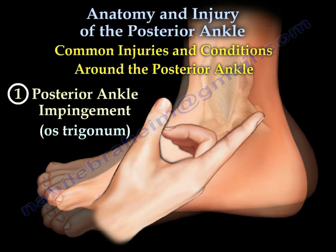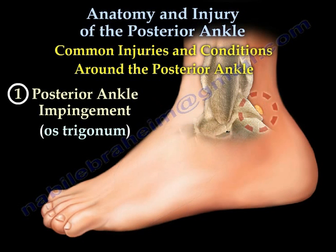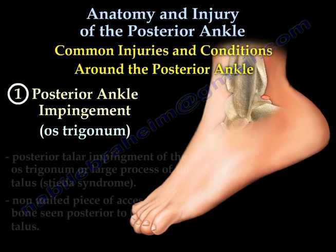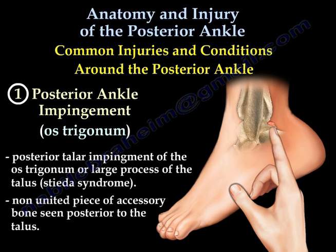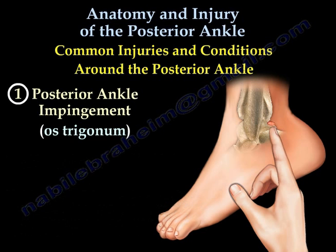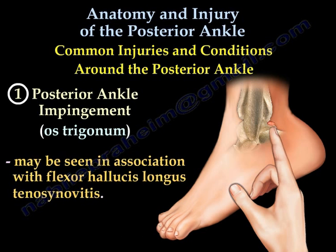The first type is posterior ankle impingement, os trigonum — posterior talar impingement of the os trigonum or large process of the talus. This is a non-united piece of accessory bone seen posterior to the talus, common among athletes such as ballet dancers. It is associated with tenderness in the posterolateral aspect of the ankle, posterior to the peroneal tendon, especially with passive plantar flexion. It may also be seen in association with flexor hallucis longus tenosynovitis.